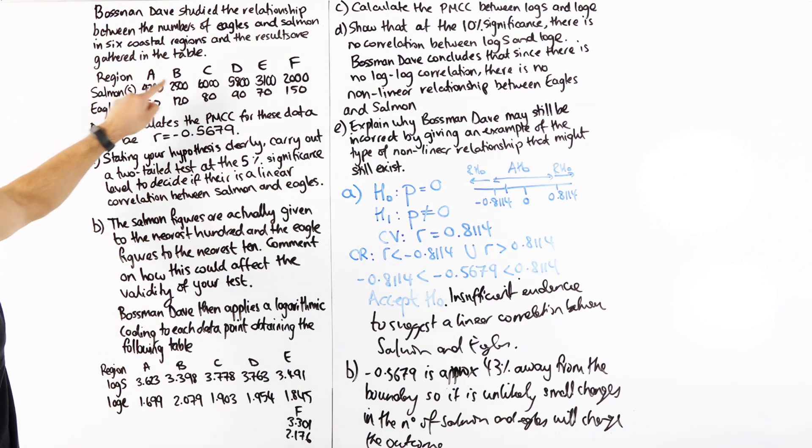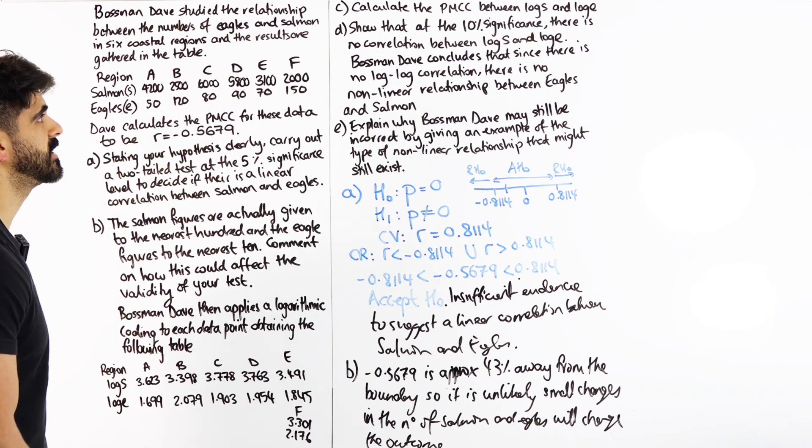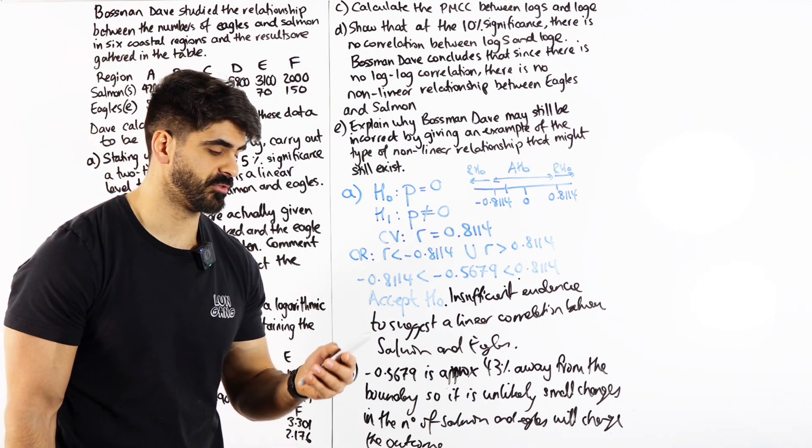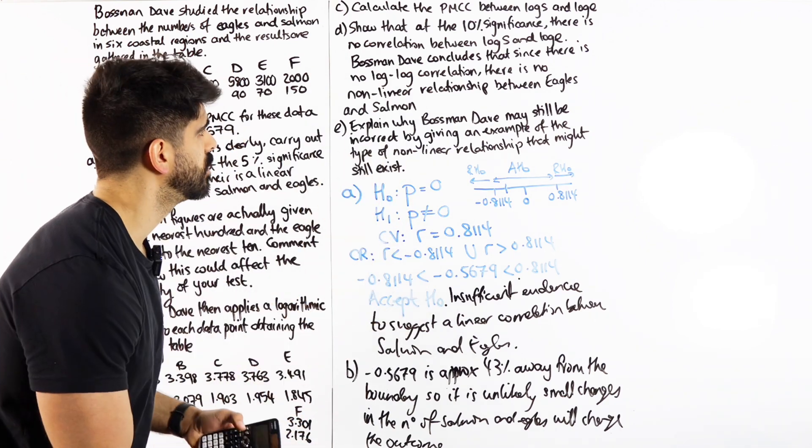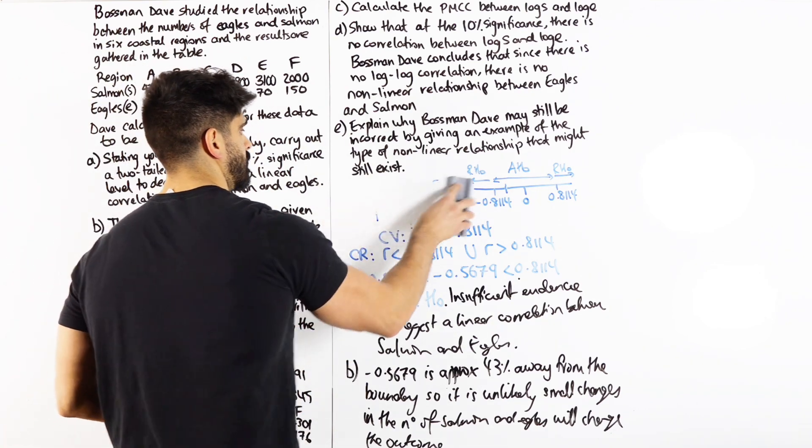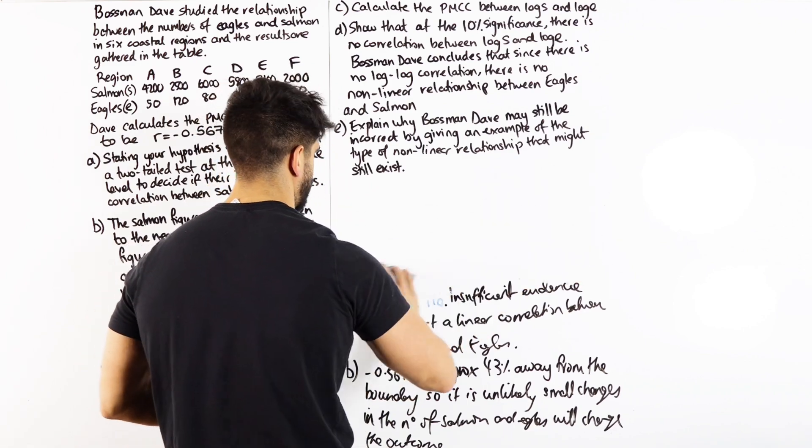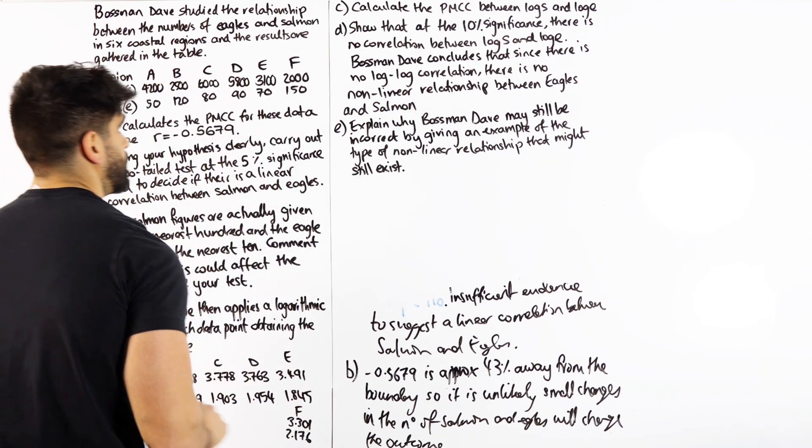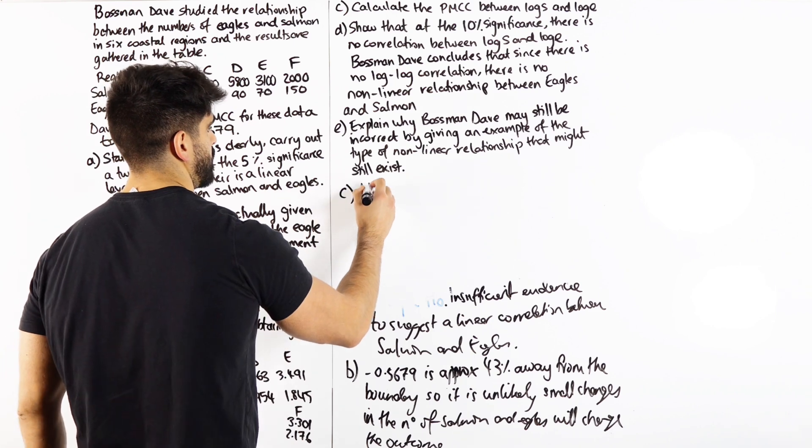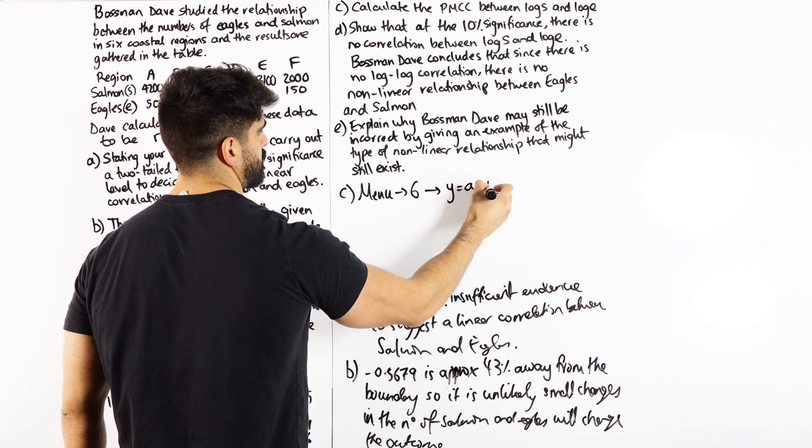Bossman Dave then applies a logarithmic coding to each data point obtaining the following table. So all he's done is he's logged every single value. Remember, log means log base 10. They've now asked to calculate the PMCC between log S and log E. For that, guys, I'm just going to explain to you. You just do menu 6 and you make sure that you go on to, so we don't need part A anymore because I did compute this earlier.